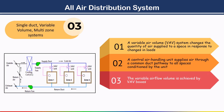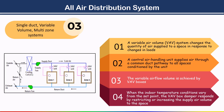Variable air volume is achieved by VAV boxes. When the indoor temperature condition varies from the set point, the VAV box damper responds by restricting or increasing the supply air volume to the space. Each zone is provided with a VAV box — a terminal control box — that adjusts the air supply volume in response to the zone thermostat.